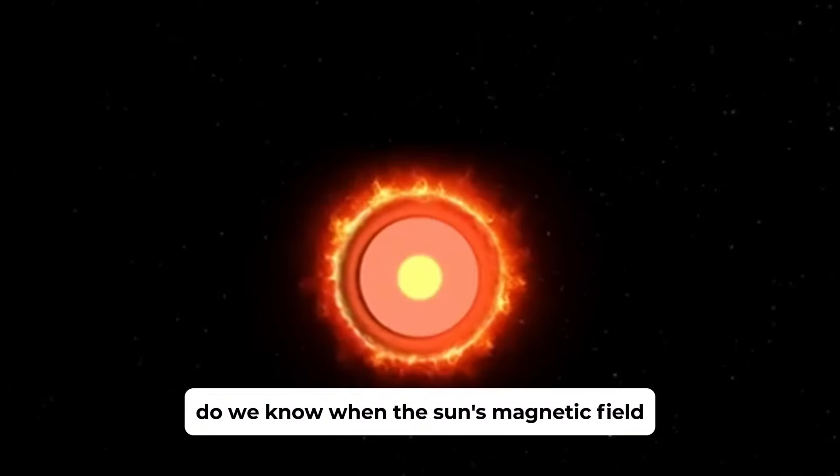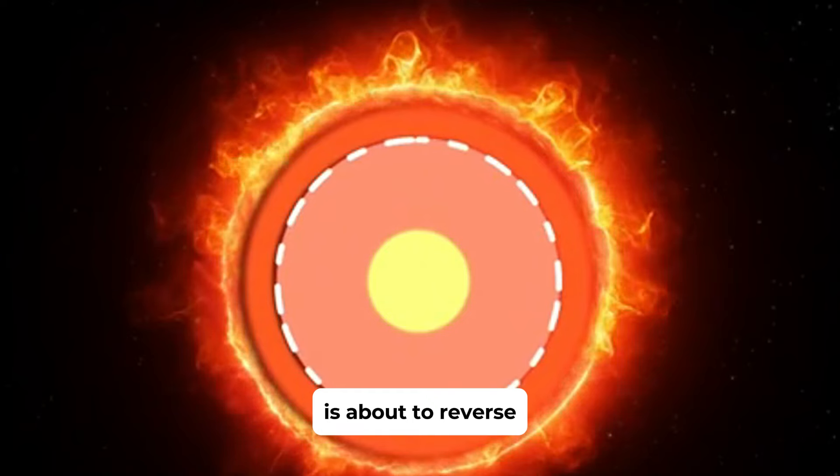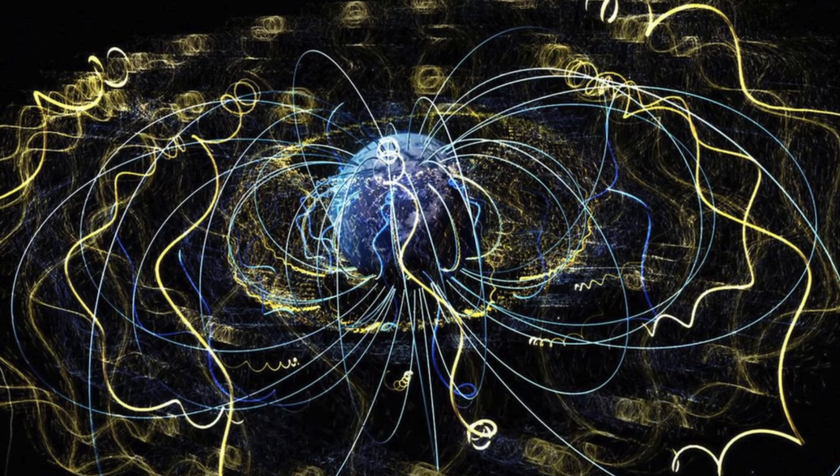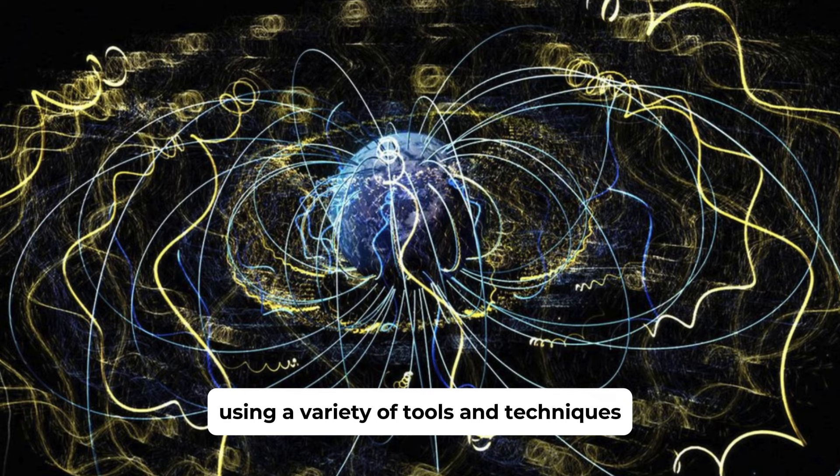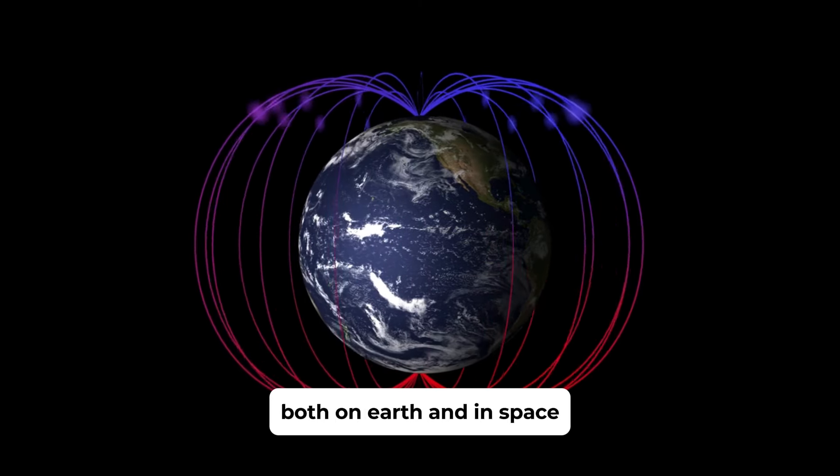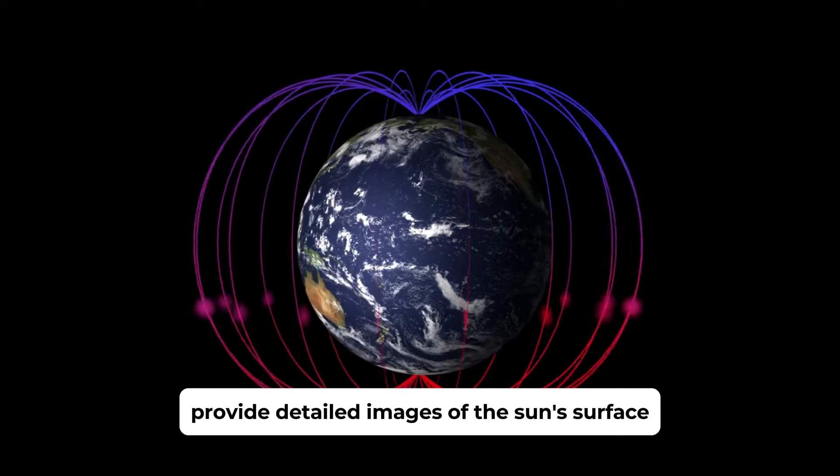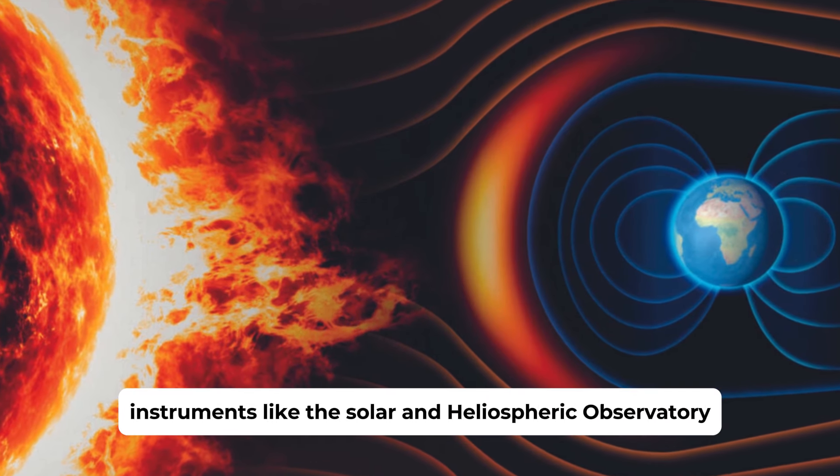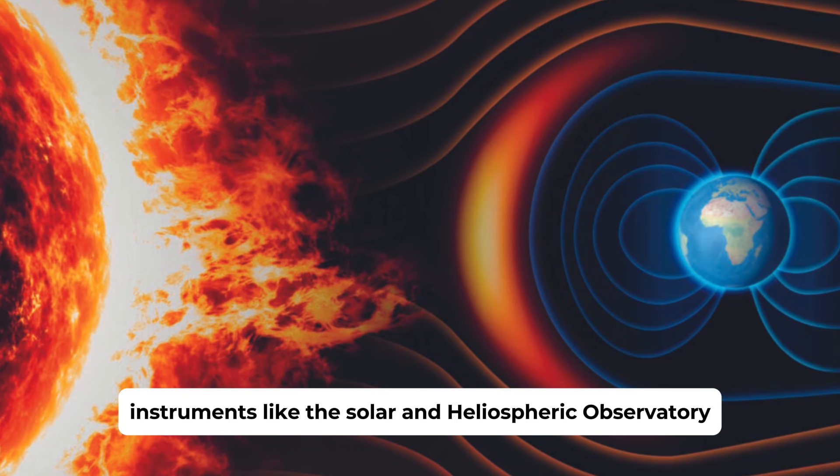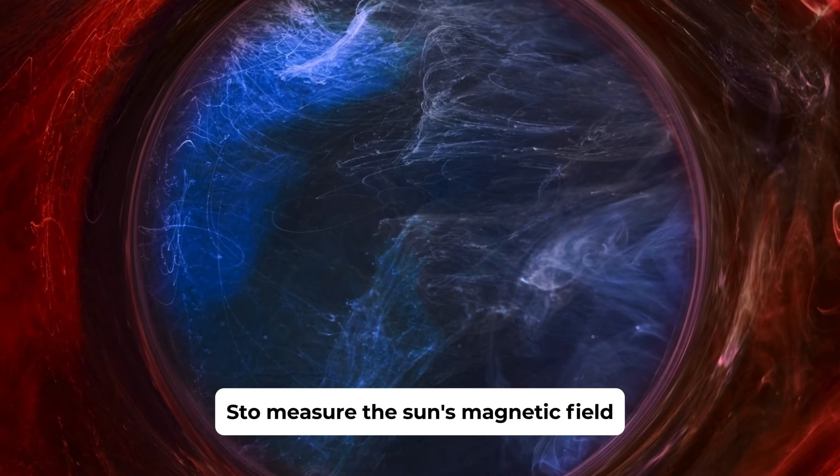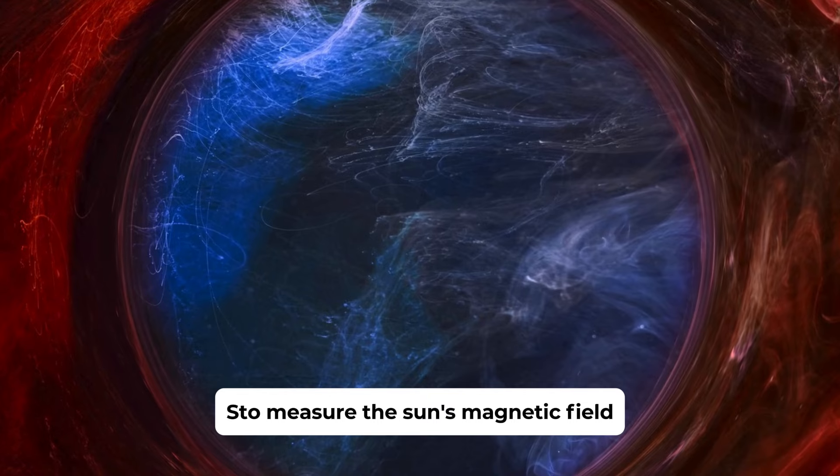So, do we know when the Sun's magnetic field is about to reverse? Scientists monitor the Sun's magnetic activity using a variety of tools and techniques. Observatories equipped with powerful telescopes, both on Earth and in space, provide detailed images of the Sun's surface and its sunspots. Instruments like the Solar and Heliospheric Observatory (SOHO) and the Solar Dynamics Observatory (SDO) measure the Sun's magnetic field and track changes over time.